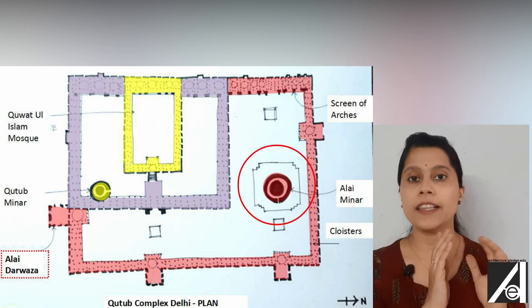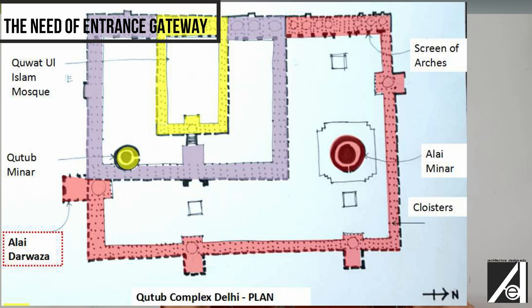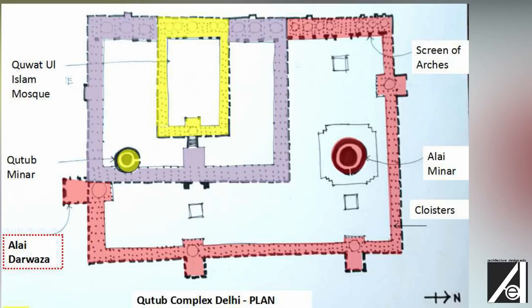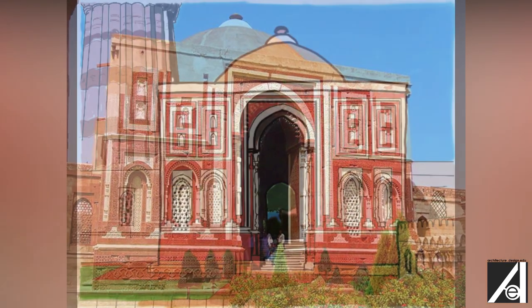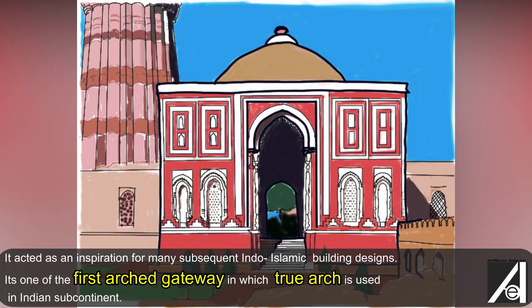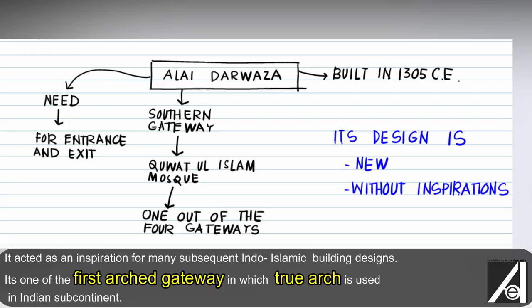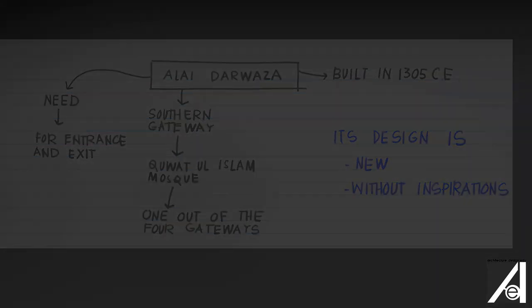Alauddin Khilji also planned a minaret similar to the Qutb Minar. When the mosque was expanded to six times its original size, more entrance gateways were needed to accommodate the large number of people. Four gateways were planned and designed, but out of those only one remains — the Alai Darwaza. It is a very prominent gateway because many subsequent buildings were inspired by the techniques used in it.